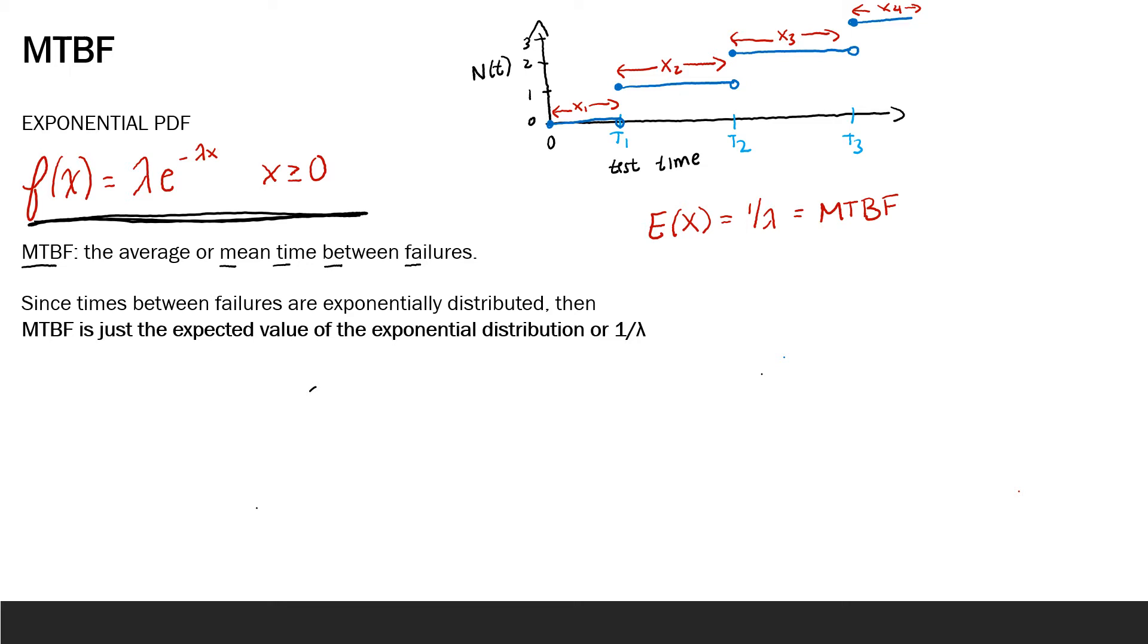So since these times between failures are exponentially distributed, recall we're denoting these times between failures as our x sub i, the times between these recorded failures. So I drew this graphic multiple times in the last module where we have our test time on the x-axis and the cumulative number of failures that we've counted using a Poisson process on the y-axis.